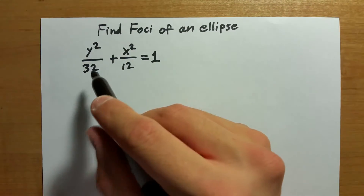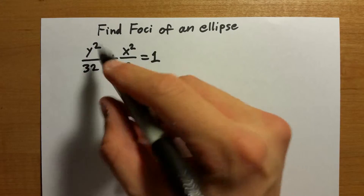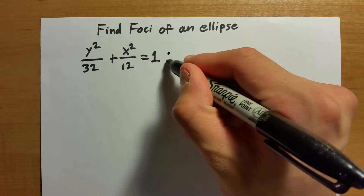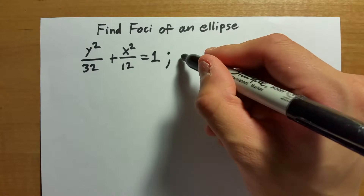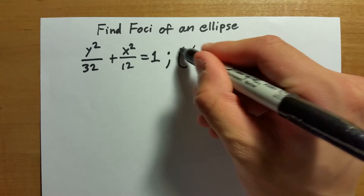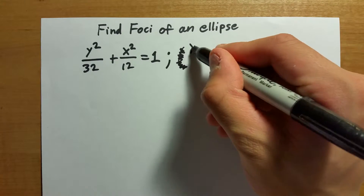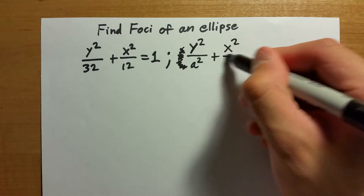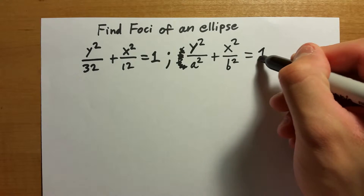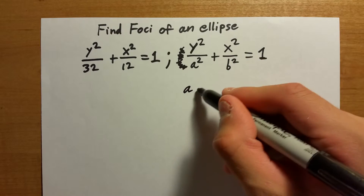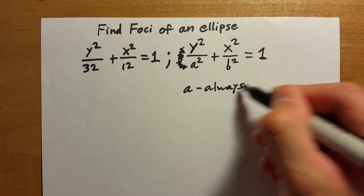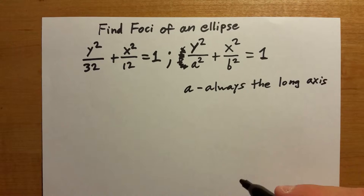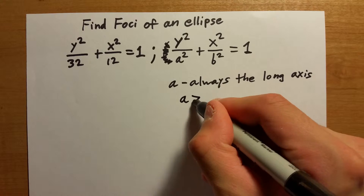First, it's going to tell us what our long or major axis is, which is going to be y, and it's going to tell us that our short axis is x. Since it's our long axis, it's going to be y squared over a squared plus x squared over b squared equals one, because a is always the long axis for an ellipse.